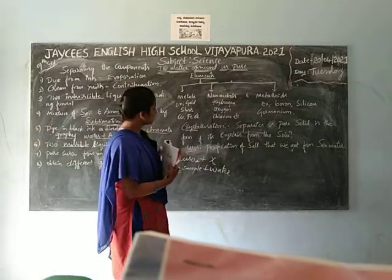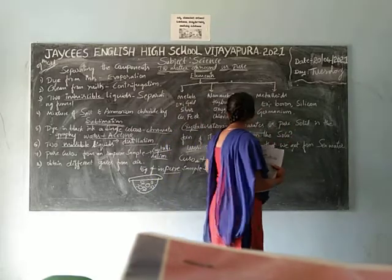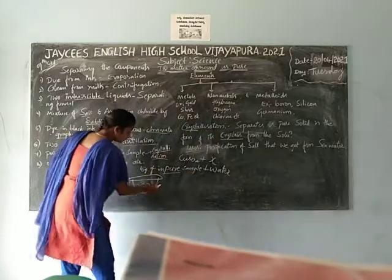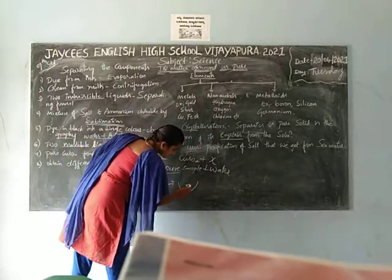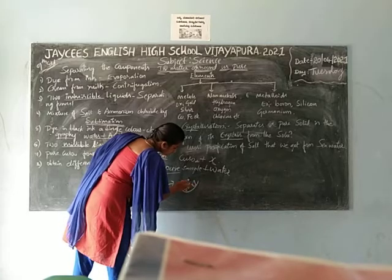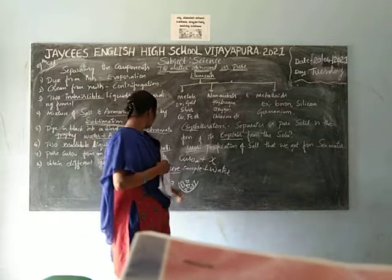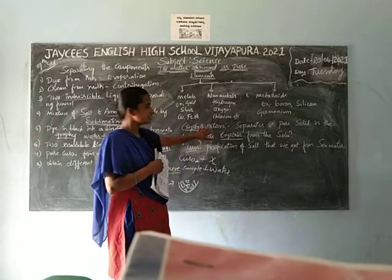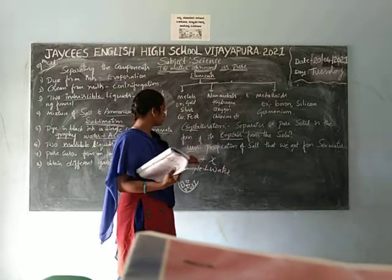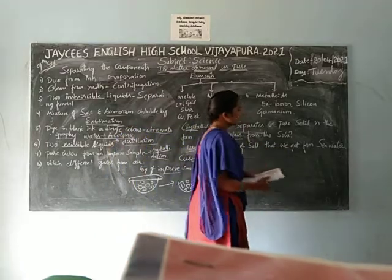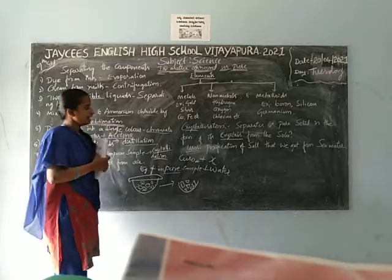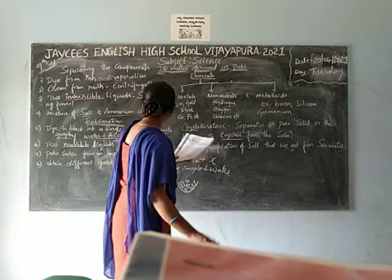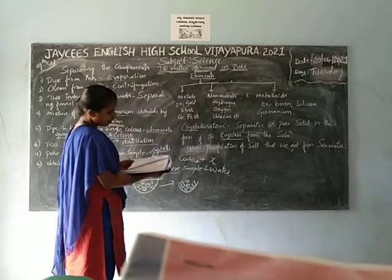This process is crystallization. The solid is obtained from the solution in the form of crystals. The solid is separated in the form of a crystal solution. The application of crystallization is the purification of salt that we get from sea water. Sea water is processed and the crystallization process gives us purified salt. This is an important separation technique.